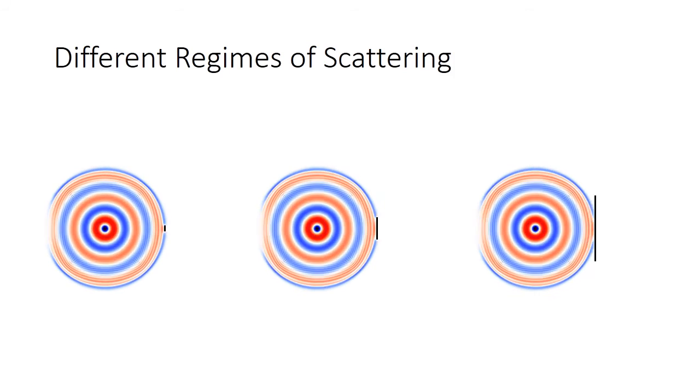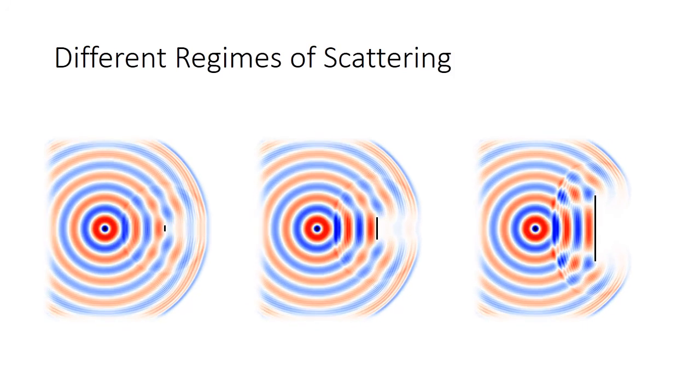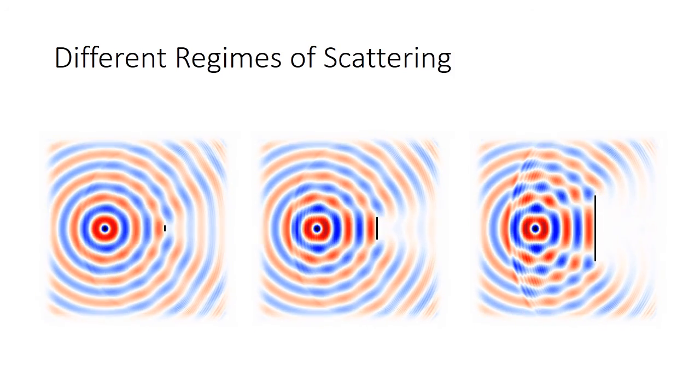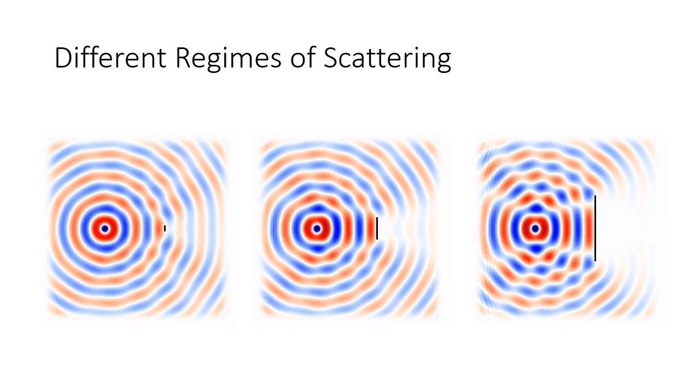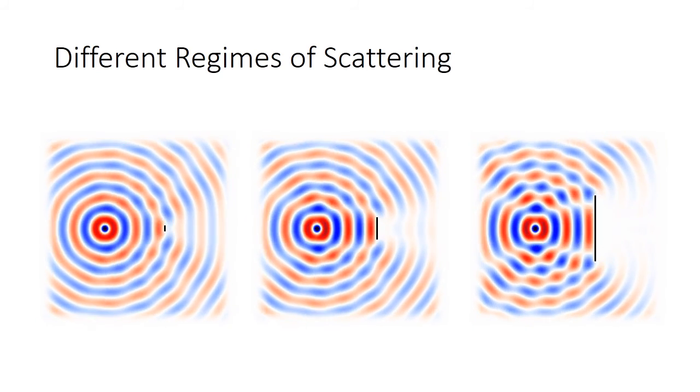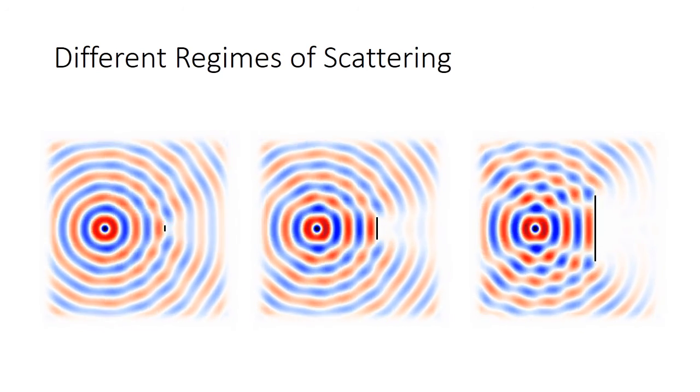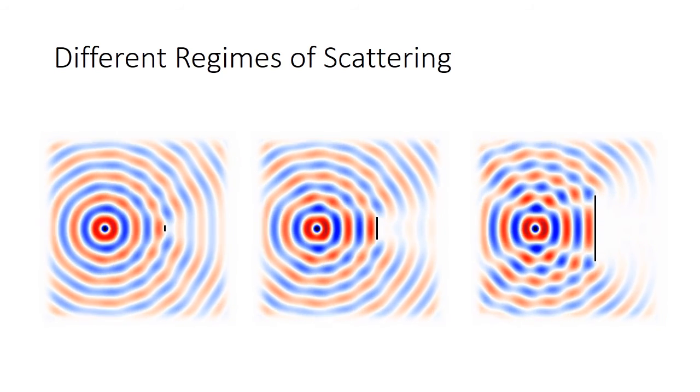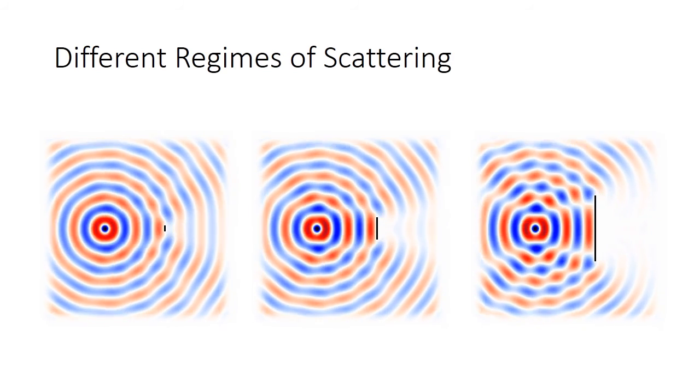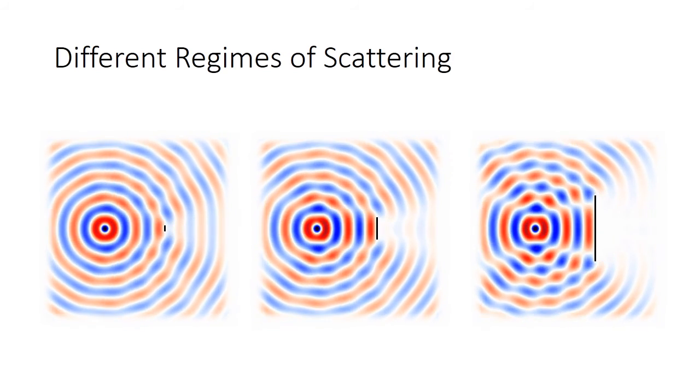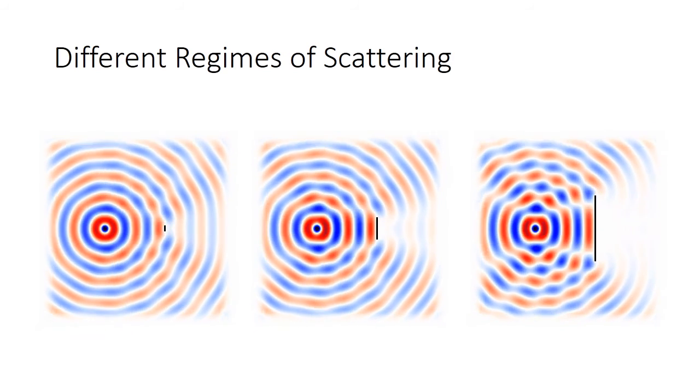So here, we can clearly see the three regimes of scattering working together. In the case of small object size, the wave passes through the object without getting affected much. In the case of comparable object size, only part of the wave bends around the object. For a very large object, most of the wave is reflected back which interacts with the source wave to form almost a standing wave pattern.